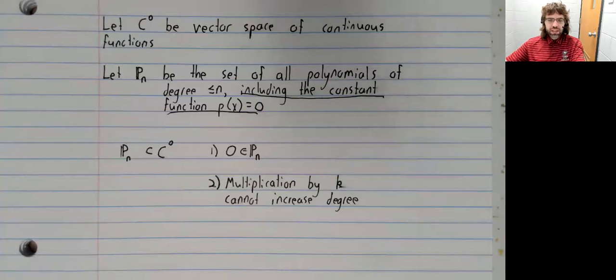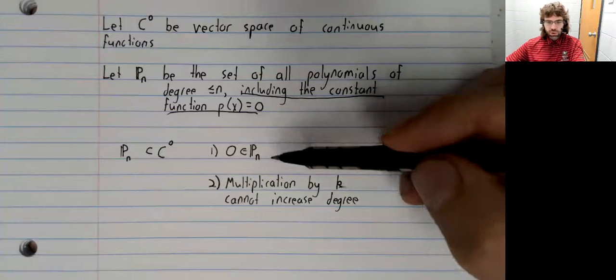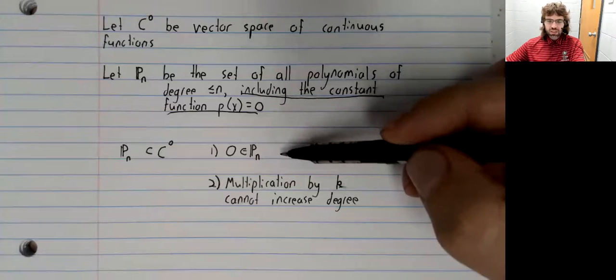But if k is zero, we have the zero polynomial, and that's in there.